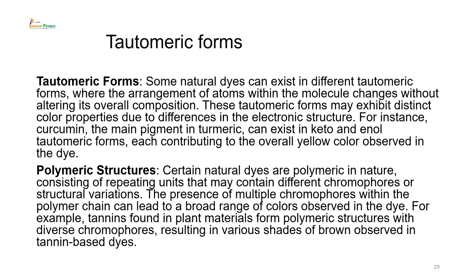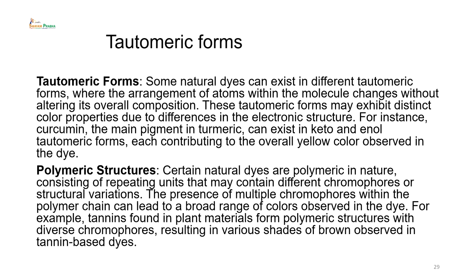Now, tautomeric forms — we have seen this in the case of curcumin. Some natural dyes can exist in different tautomeric forms, where the arrangement of atoms within the molecule changes without altering its overall composition. These tautomeric forms may exhibit distinct color properties due to differences in electronic structure. For instance, curcumin, the main pigment of turmeric, can exist in keto as well as enol tautomeric forms, each contributing to the overall yellow color observed in the dye.